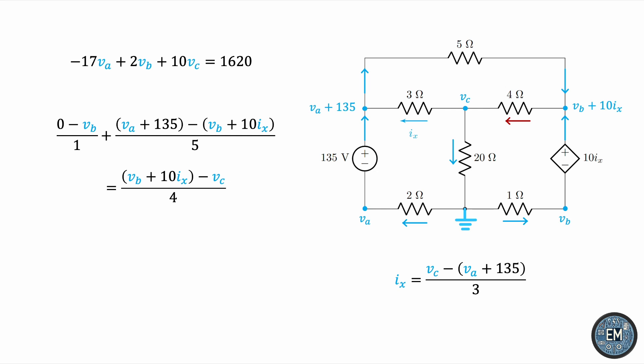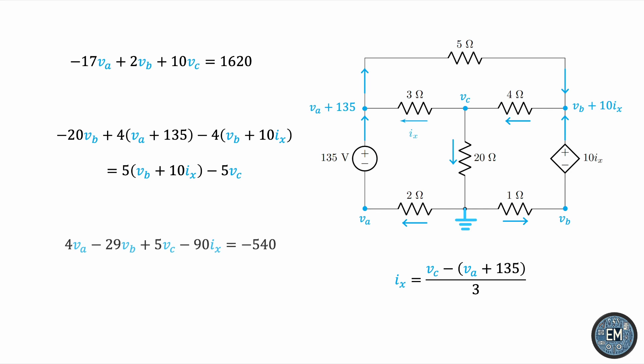And now, we clear the denominators by multiplying everything by 20. And then, we'll expand the brackets, clean up, bring all the like terms together. And we reach this equation, again involving IX, so we have to get rid of it by replacing it with its equivalent in terms of the voltages. More cleaning up, more algebra, and you end up with this equation involving the three voltages.